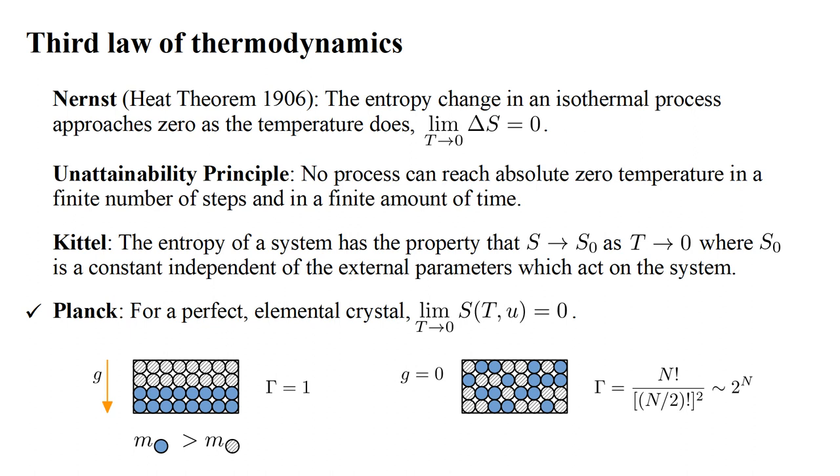Now, repeat the process with the external parameter set to zero. No gravitational field is present. The system will freeze into an arrangement in which the atoms are randomly positioned. For large n, the number of possible arrangements, is gamma approximately equal to two to the n. So, the entropy of this system at absolute zero depends on the value of the external parameter, the gravitational field. With a gravitational field, the entropy is zero. Without a gravitational field, the entropy is approximately K n log two.